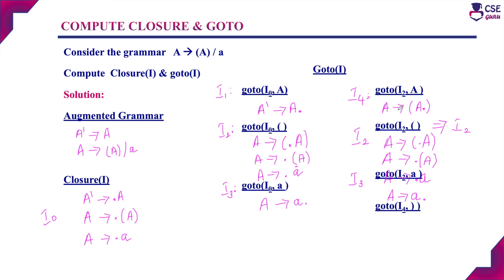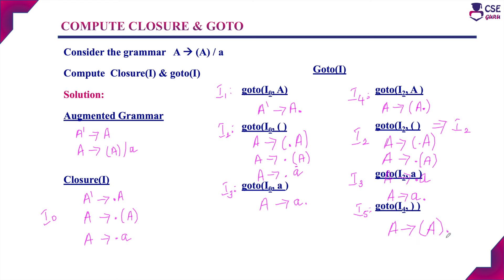Next, we have to check state I4. That is goto(I4, close bracket): A derives open bracket A closed bracket dot. This state is I5 — the new state I5. Now I4 state is also over. Checking I5 state: A derives open bracket A closed bracket dot — after the dot there are no more symbols, so this state is also over. The goto operation is complete.